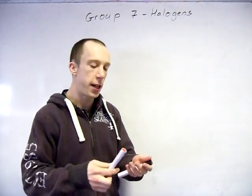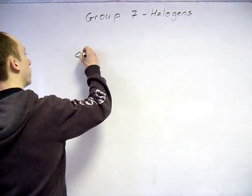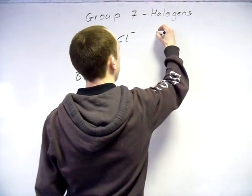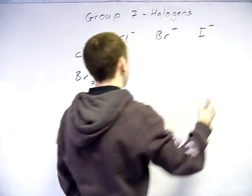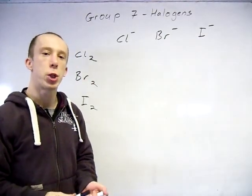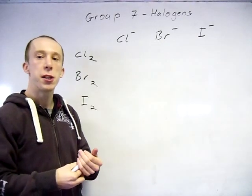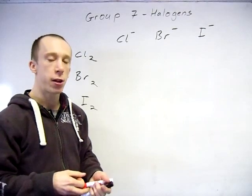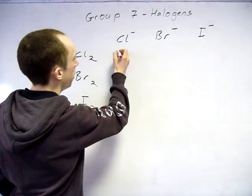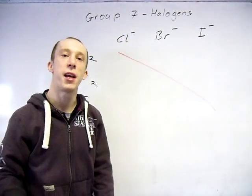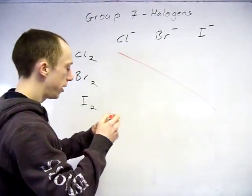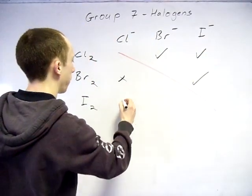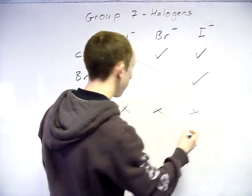Right, next bit we'll go on to, we'll look at the displacement reactions. So this is a series of reactions what you've actually done, where you are testing the oxidising power of the elements and the reducing power of the anions. So the anions there, negative charge. And you're actually looking for where a reaction took place. So I'm just going to put a line diagonally through there because obviously we didn't test chlorine against the chloride ion, no point.